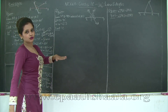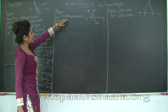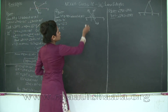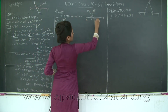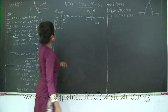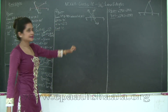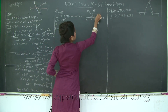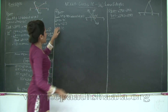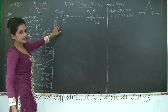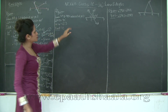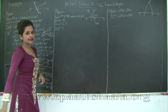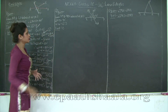Moving on to question 2. We have been given that lines XY and MN intersect at O. So we have line XY and MN intersecting at O. Angle POX is 90 degrees — you can see that POX is 90 degrees here. And the ratio of A to B is 2 is to 3. We need to find angle C.